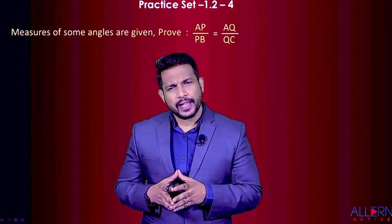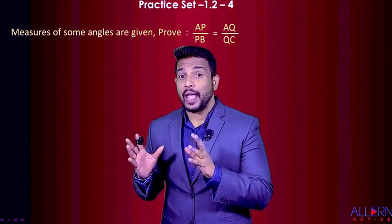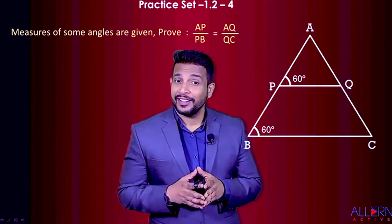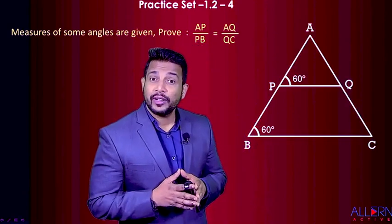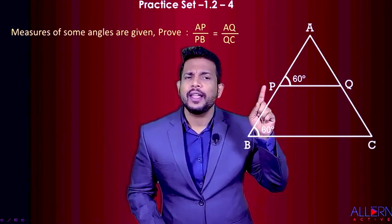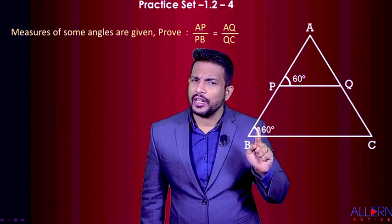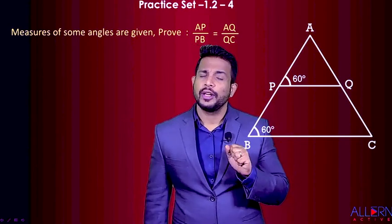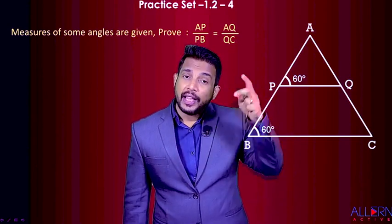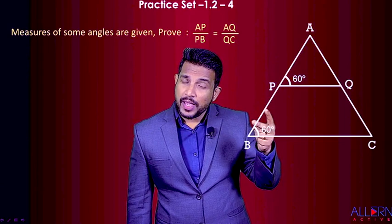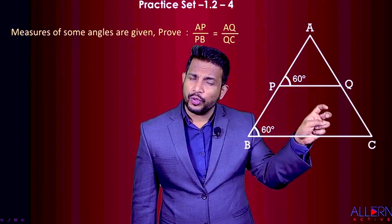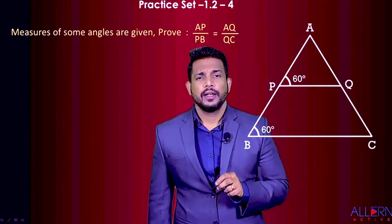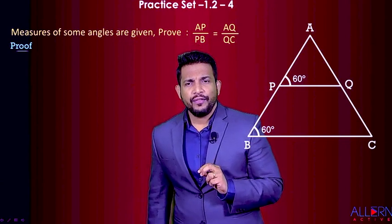Let's do a very simple one. We have a figure and the measures of some angles are given. Angle APQ is given as 60° and angle ABC is given as 60°. That's the information, and we need to prove that AP upon PB is equal to AQ upon QC.